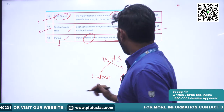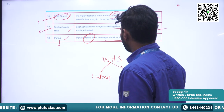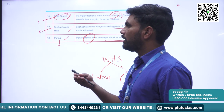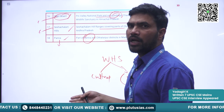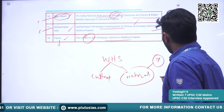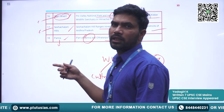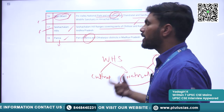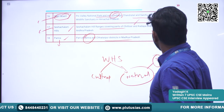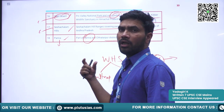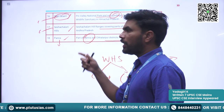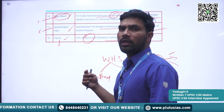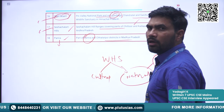Try to read yourself about the Natural World Heritage Sites. In India there are seven Natural Heritage Sites. Nilgiri is part of it, Western Ghats is part of it. Try to find out those lists and gather important information about these Natural World Heritage Sites, as these are also recognized under UNESCO.